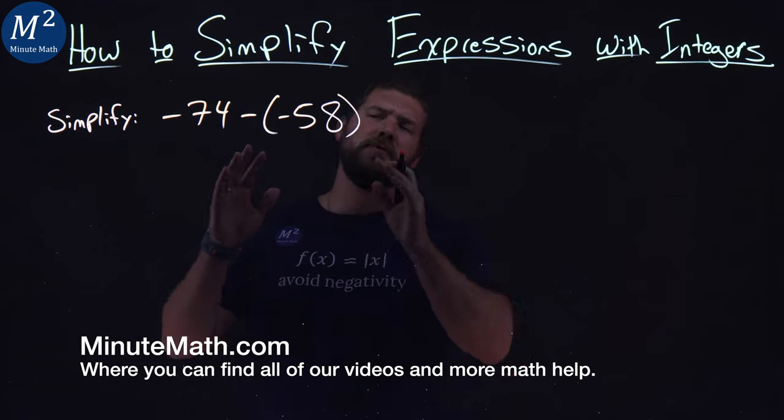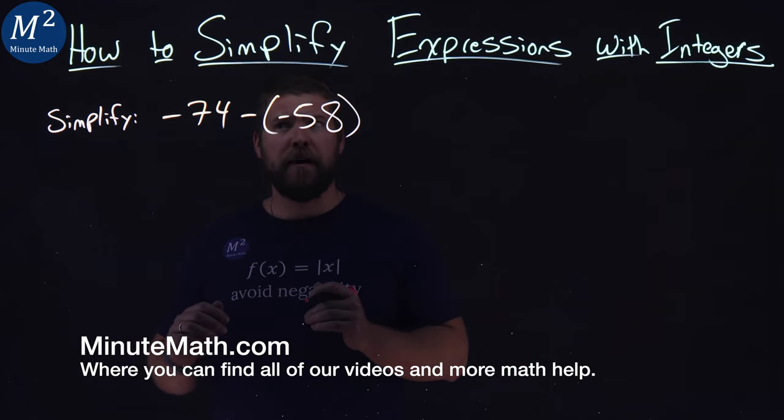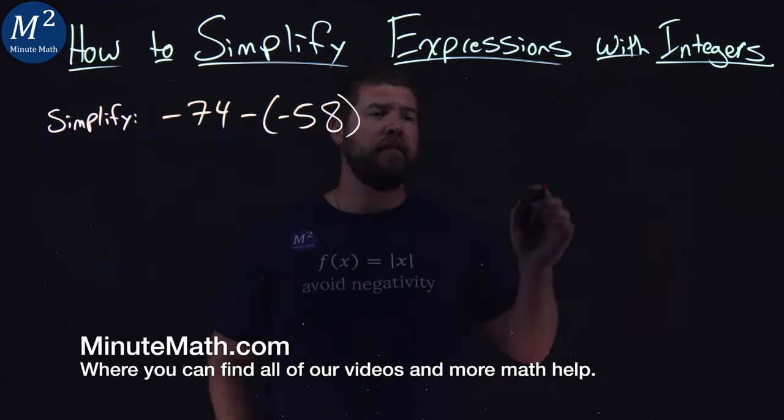We have two two-digit numbers that we're wanting to simplify. Negative 74 minus a negative 58.